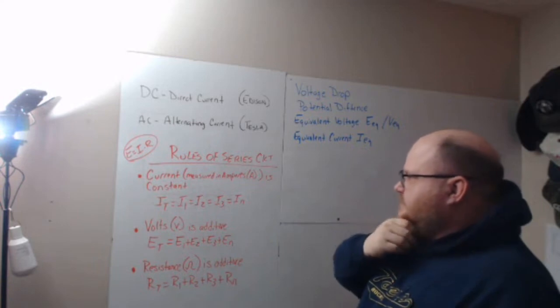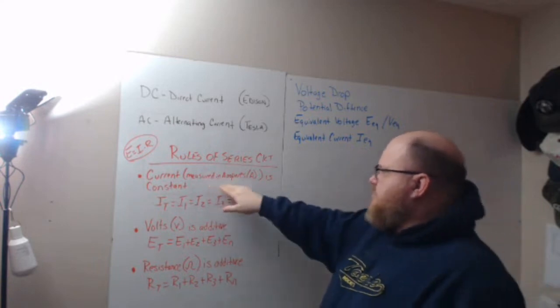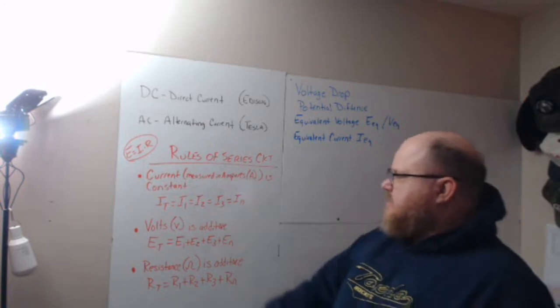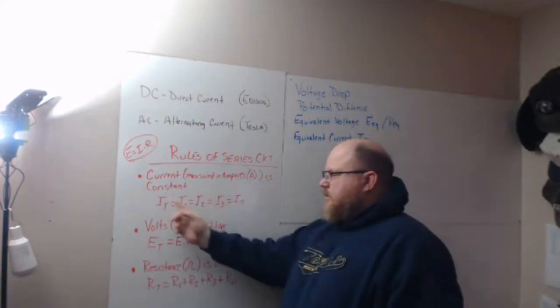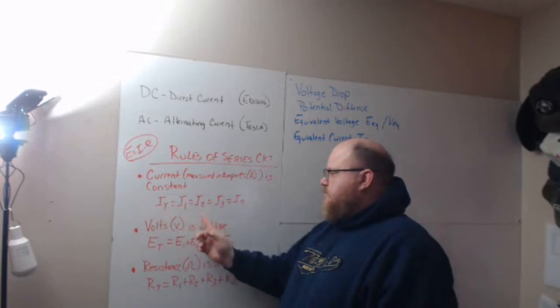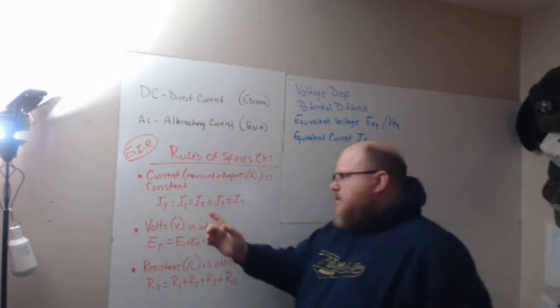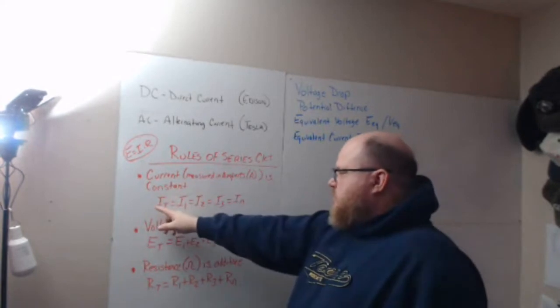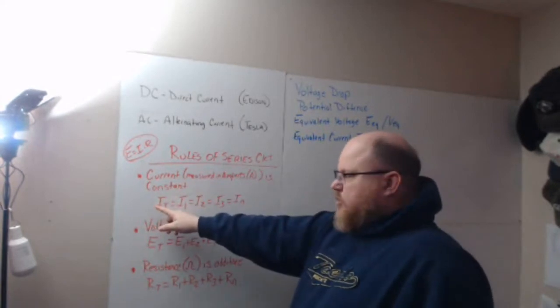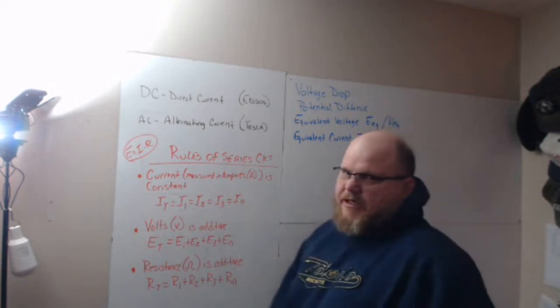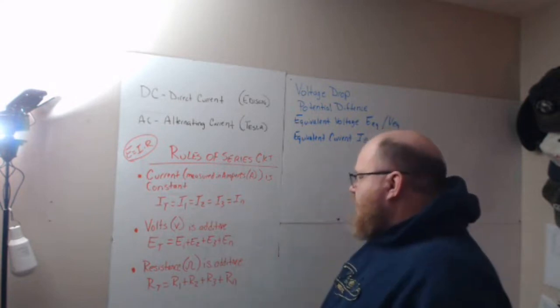In a series circuit, current, which is measured in amperes using A as a symbol, is constant. So the I total equals I1 equals I2 equals I3 equals I to a number, an infinite number. So that means that the current for your source or your total is going to be equal throughout the entire circuit at every load, every position.